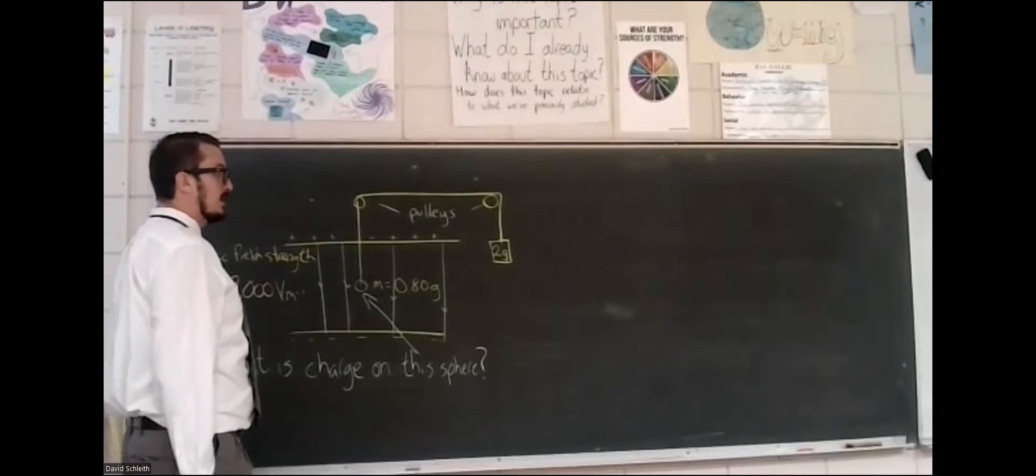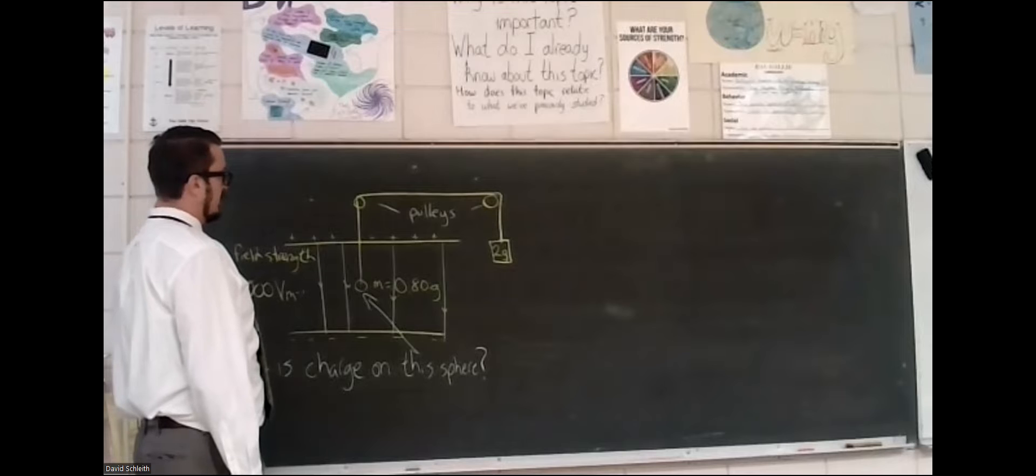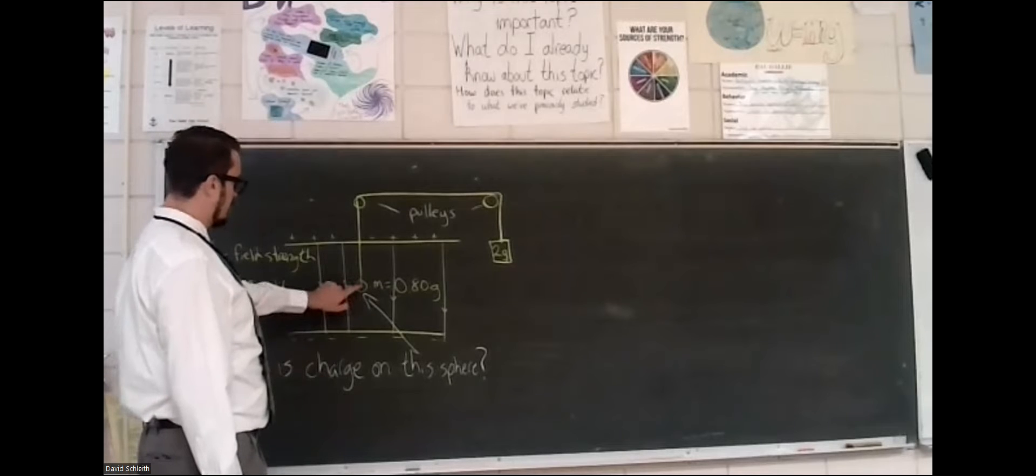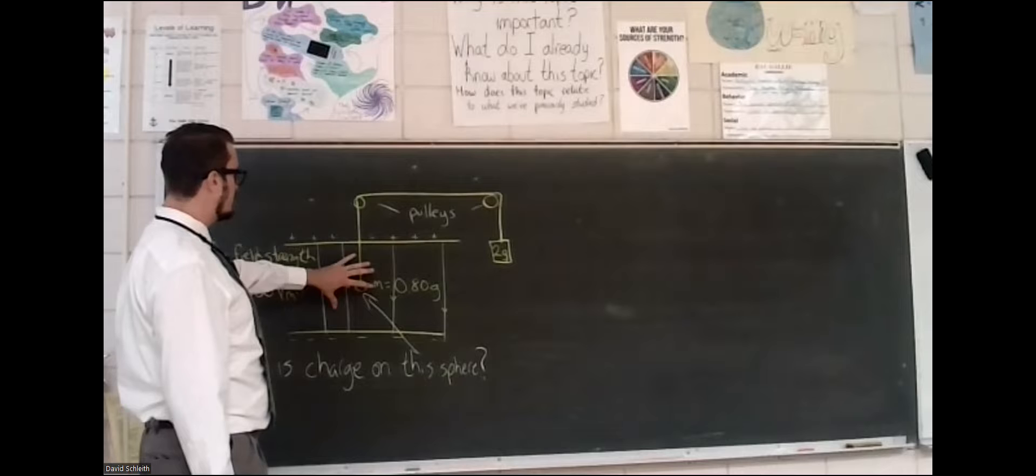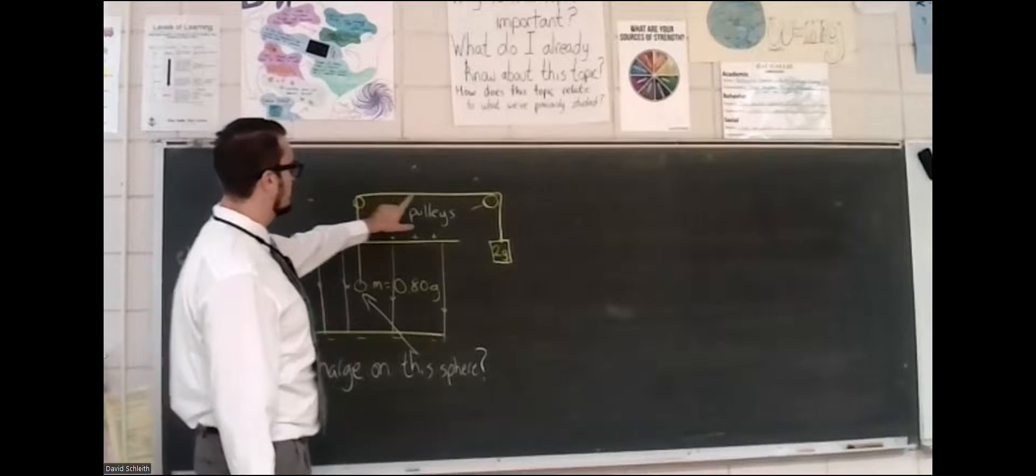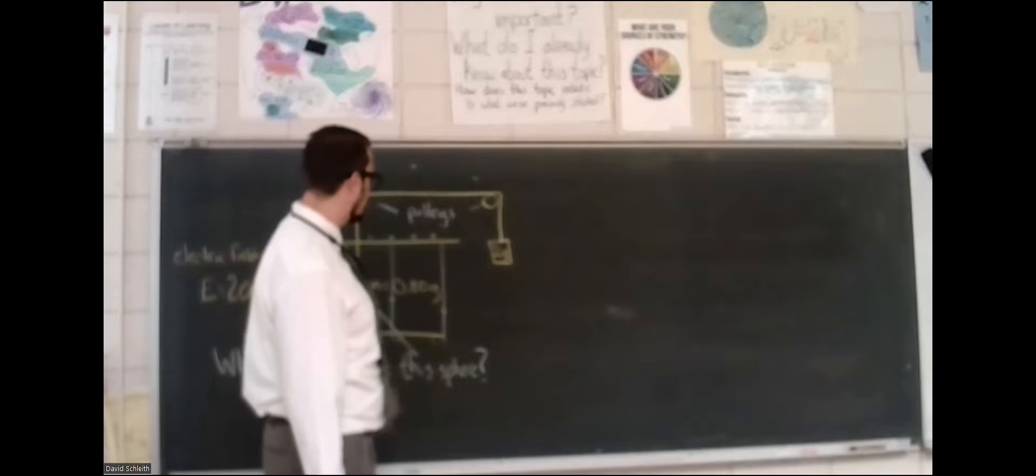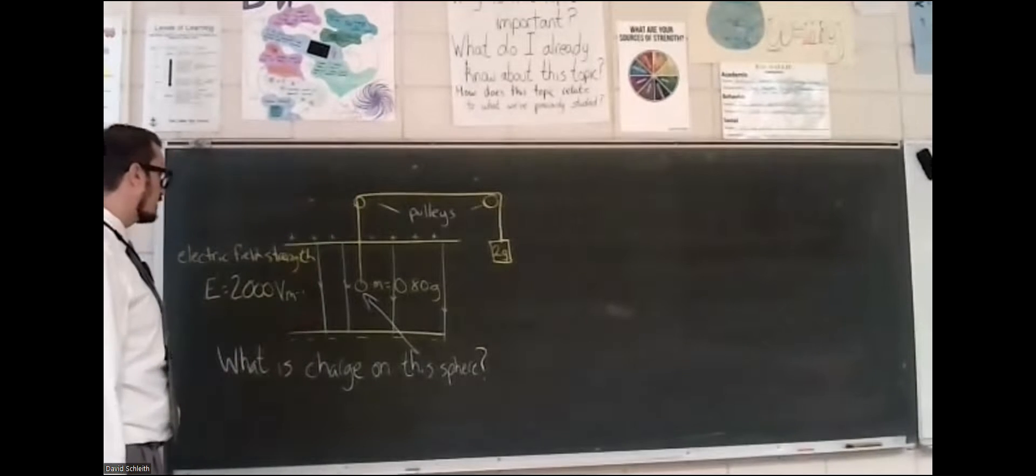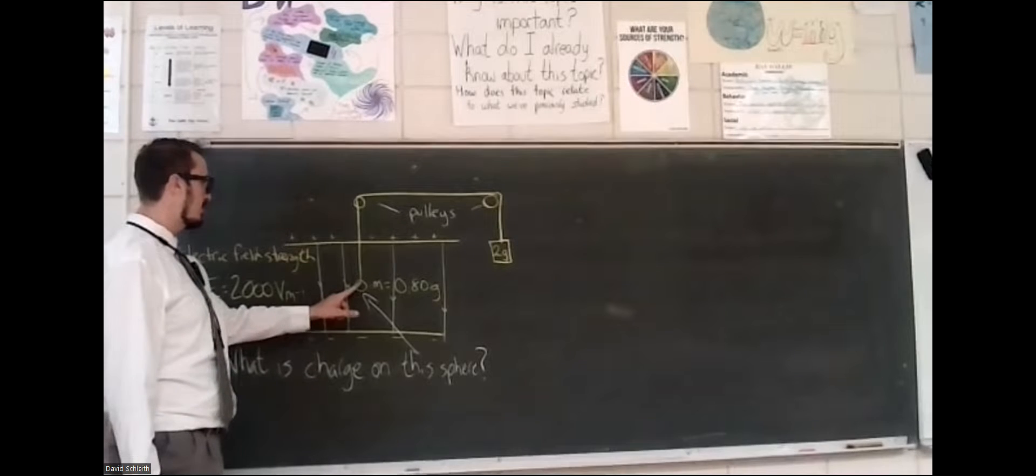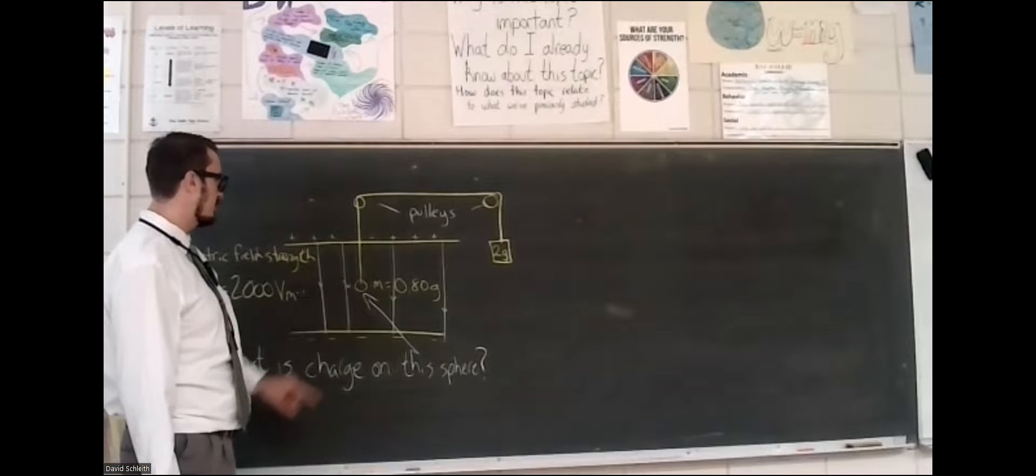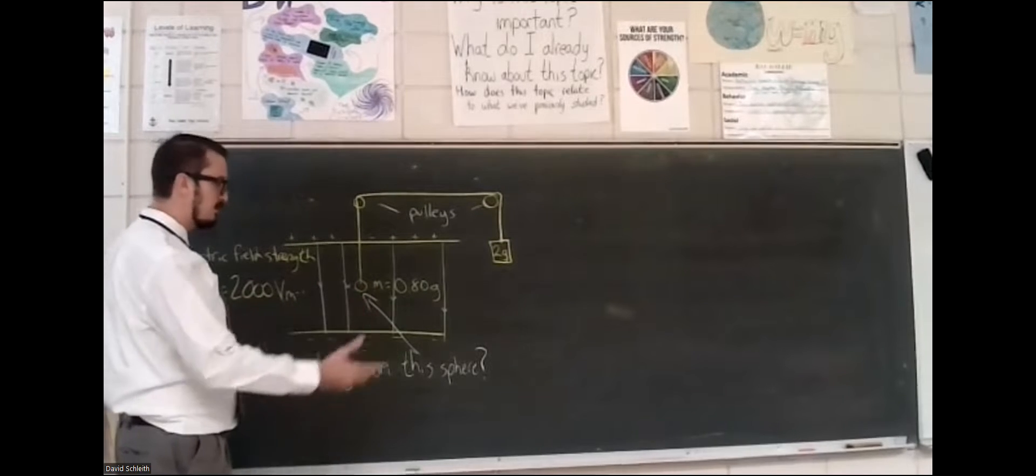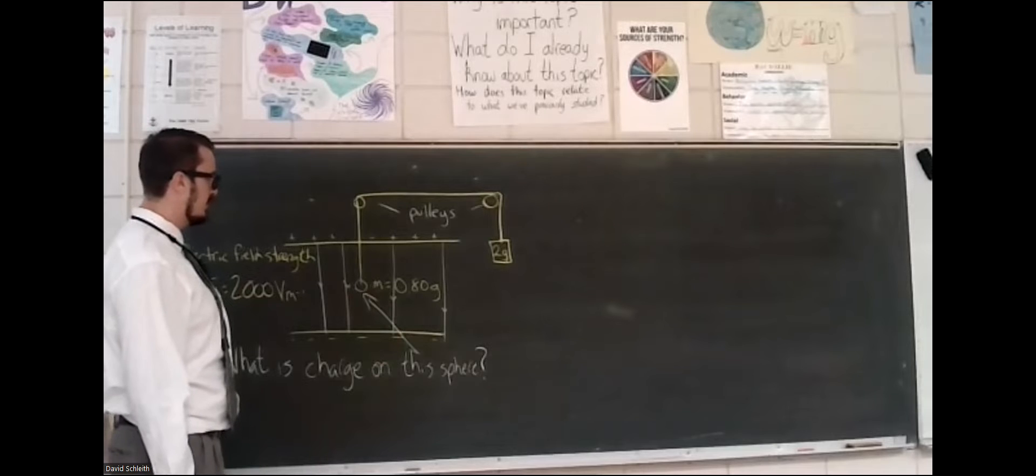Welcome to another worked example with Dr. Schleif. In this physics question, we're considering a spherical mass that's been suspended in an electric field connected to a system of pulleys and a 2-gram mass. We know that this system is in equilibrium, which means that there is no net force and no net torque acting on it. Since it's not a pivot type question, we really only have to consider the first condition of equilibrium: no net force.